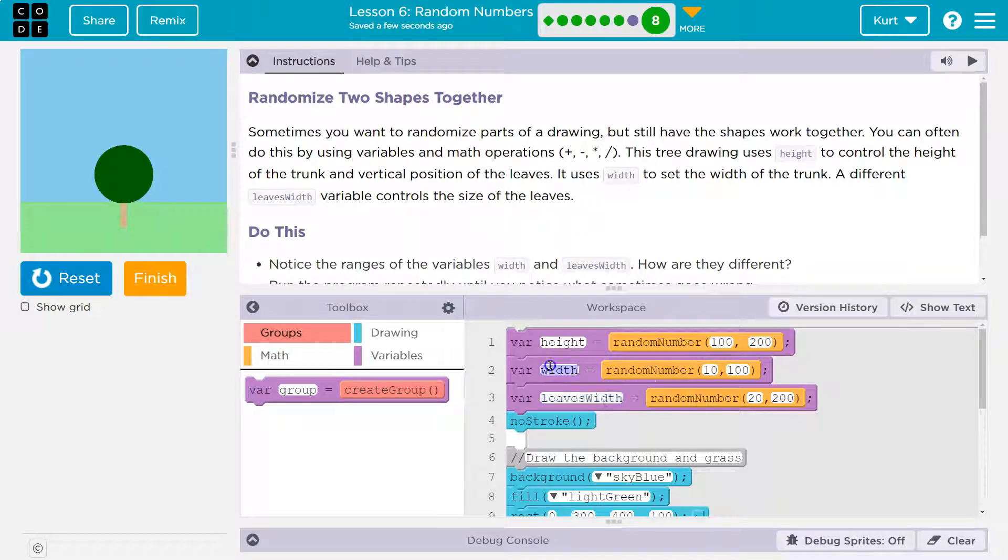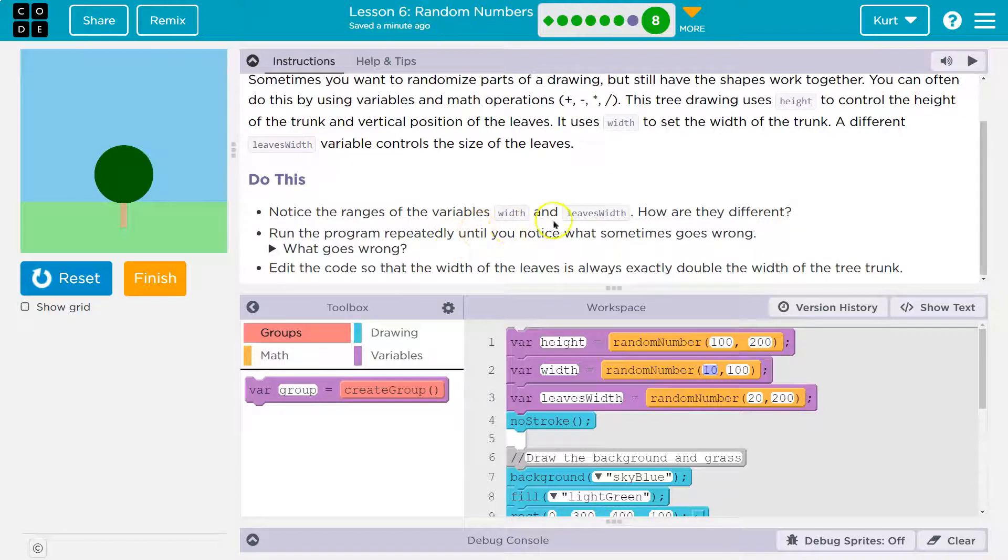Okay, leaves width, width, so like they're saying this is the width of the trunk variable. Okay, notice the range of variables width and width leaves. Yep, width is 10 to 100. Leaves is 20 to 200. Wow, so it can be twice as big. How are they different? Yep, twice as big.